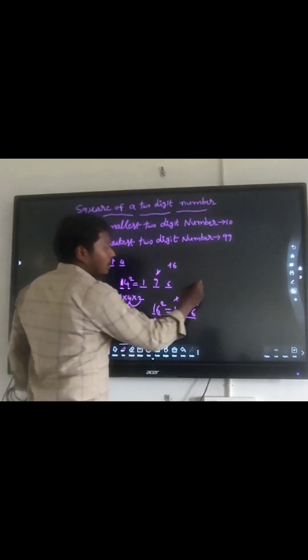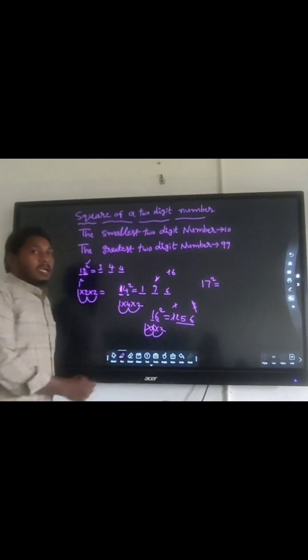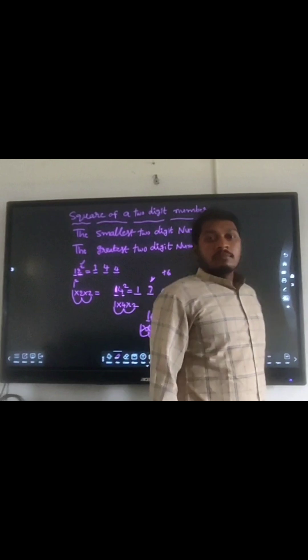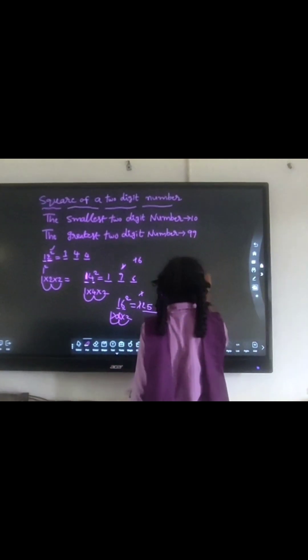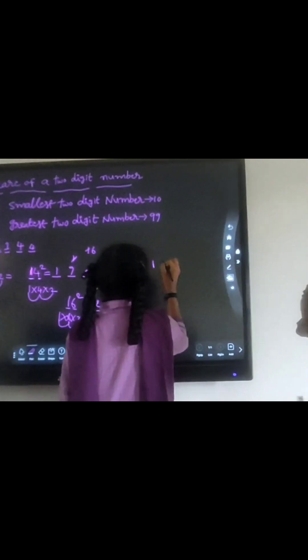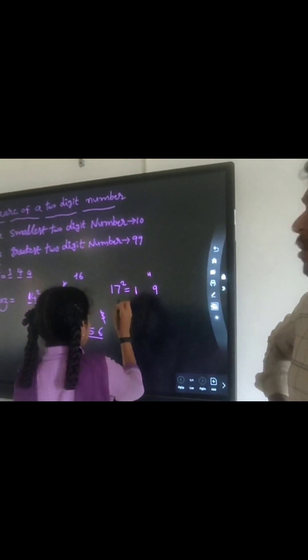17 square. Anybody can do the answer? Step 1: 1 square is 1. Super. Step 2: Do 7 square, which is 49. Excellent. 4 is carried forward.